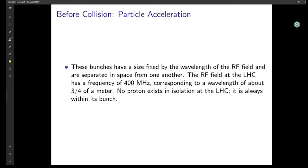These bunches have a size fixed by the wavelength of the RF field and are separated from one another. The RF field at the LHC has a frequency of about 400 megahertz, corresponding to a wavelength of about 0.75 meters. No proton exists in isolation at the LHC — it is always within its bunch. The wavelength of the RF field, around 0.75 meters, gives the size of the bunch.